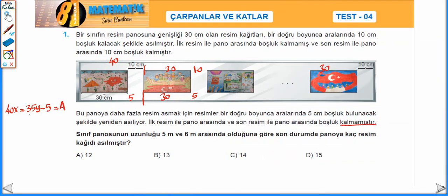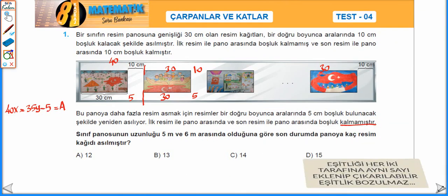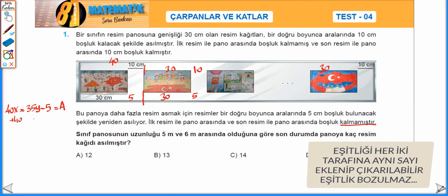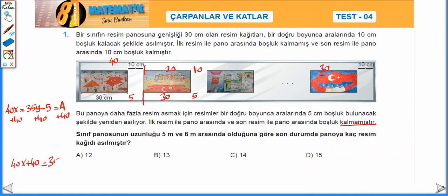Panonun uzunluğunu a diyelim. Burada her tarafa 40 ekleyelim ki bu eksi 5'i yok edelim. Artı 40, artı 40, artı 40. Dolayısıyla 40x artı 40 eşittir 35y eksi 5 artı 40, daha artı 35 eşittir a artı 40.